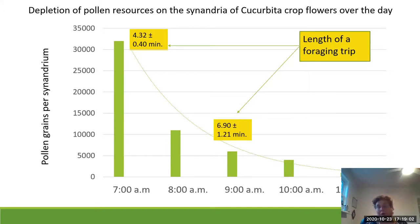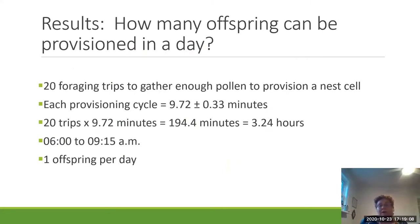So how many offspring can be provisioned in a day? We know it takes about 20 foraging trips to gather enough pollen to provision a nest cell, and that each provisioning cycle is about 9.72 minutes long. Multiplying those together, provisioning a nest cell takes about 3.24 hours, or 3 hours and 15 minutes. This fits neatly into the period between 6 and 9:15am when pollen supplies are at their greatest, and after that pollen supplies are nearly depleted. So a bee can provision one offspring per day.